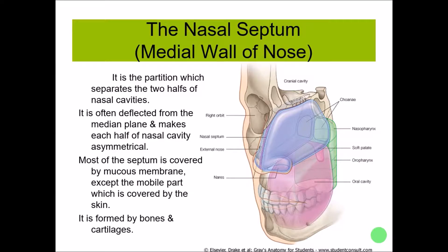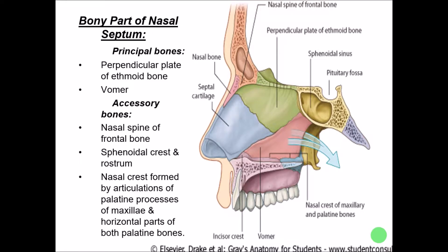The first objective is the nasal septum, or the medial wall of the nose. It divides the nasal cavity into two asymmetric halves, is covered by mucous membrane, and has a hard part and a mobile part, formed by bones as well as cartilages. The principal bones of the nasal septum are the perpendicular plate of the ethmoid bone and the vomer. Accessory bones include the nasal spine of the frontal bone, the sphenoidal crest, the rostrum, and the nasal crest formed by the palatine process of the maxilla and the horizontal plate of the palatine bone.